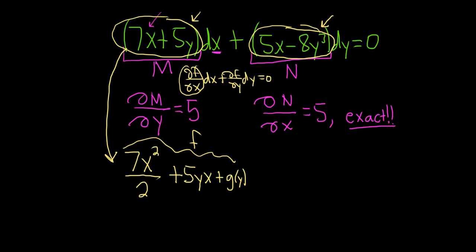Now we're going to integrate the second piece with respect to y, and that's also going to be f, so we can set these equal. Integrating 5x with respect to y gives us 5xy. Integrating the second piece here with respect to y, you'll get negative y to the 4 over 4, so negative 2y to the 4.